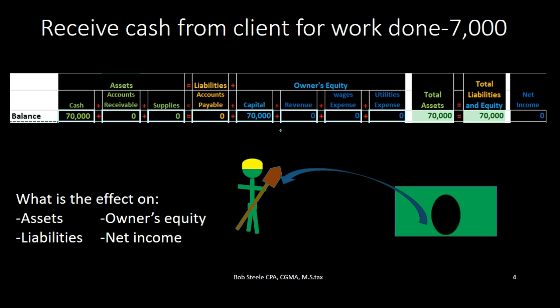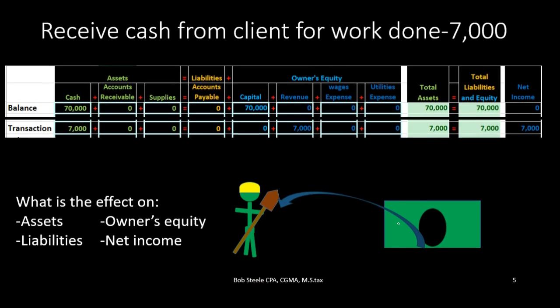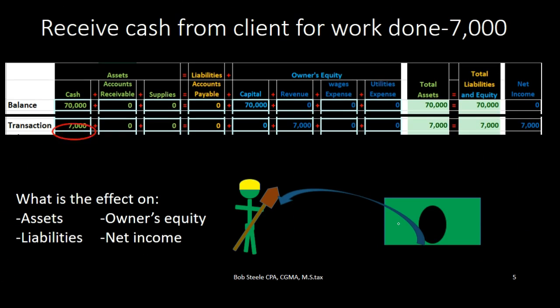The first question I generally ask is: is cash affected within this transaction? We did work, we received cash — we can see cash is affected. Cash is going up. Therefore, with the new transaction, cash is going to go up. What's that going to do to assets? Increase the assets, so assets are going up.